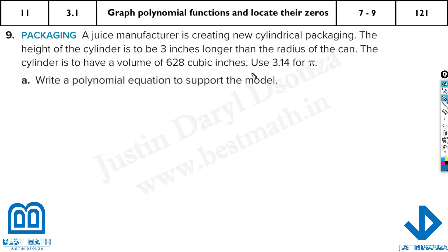Another real-world problem here. A juice manufacturer is creating new cylindrical packaging. The height of the cylinder is to be 3 inches longer than the radius of the can. Now, do we know what is the radius? They have not told anything. They have given the volume. What is the volume of a cylinder? V = πr²h. Let me take the radius as x. So then what will be the height? V = πx², the height will be 3 more than the radius, so it will be x + 3.